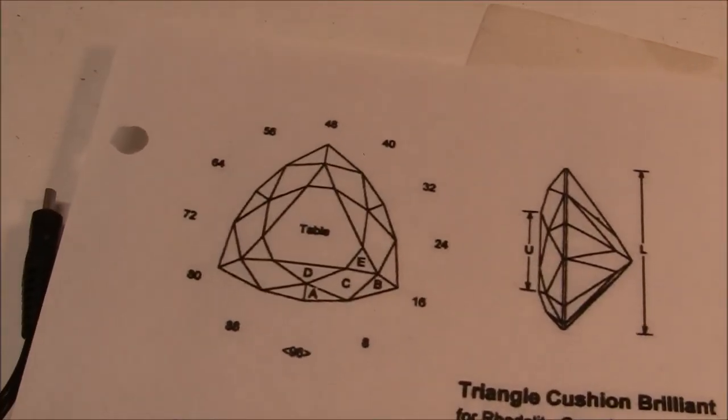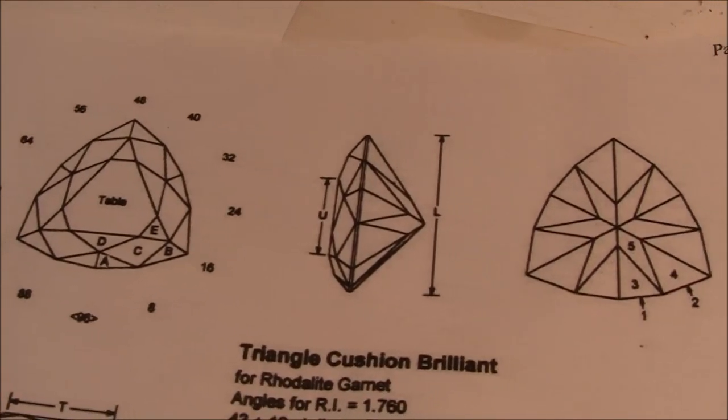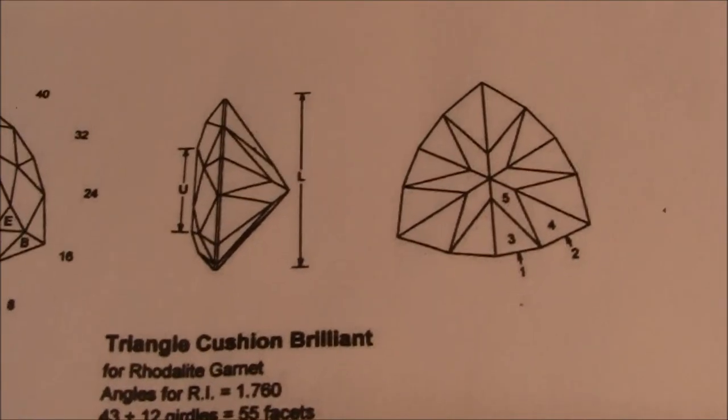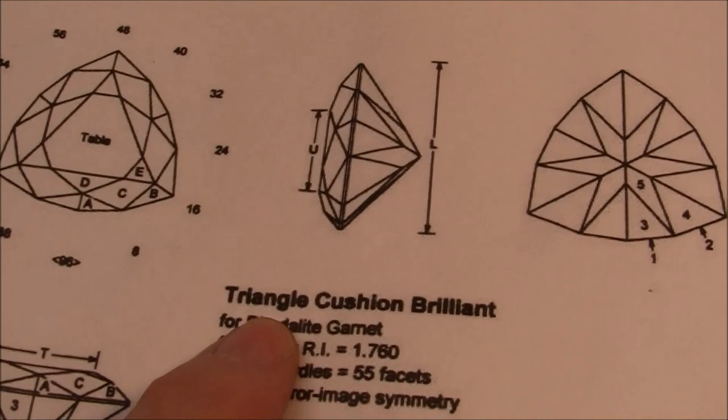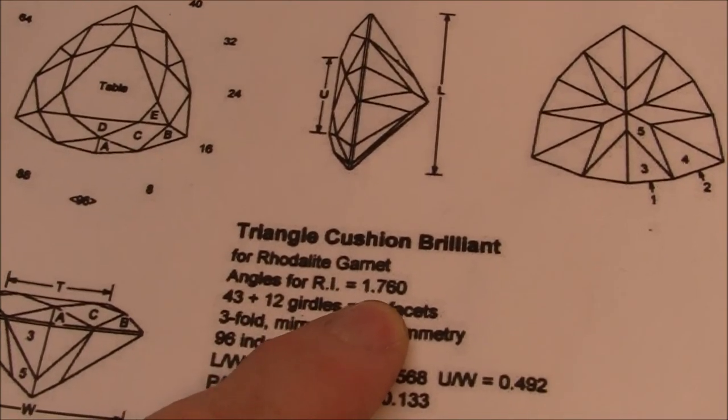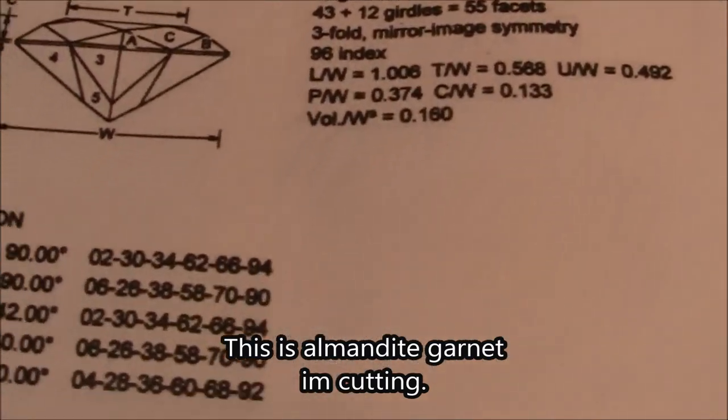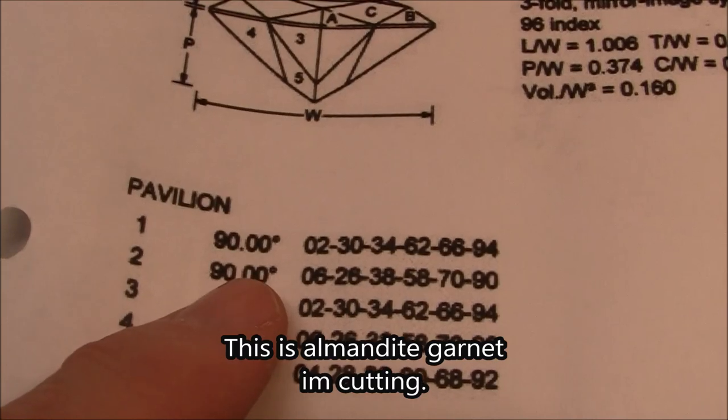Here is our diagram I'm using for this piece of garnet. Triangle cushion brilliant for almandite garnet. Angles for 1.76 refractive index. My first group of facets will be 90 degrees.